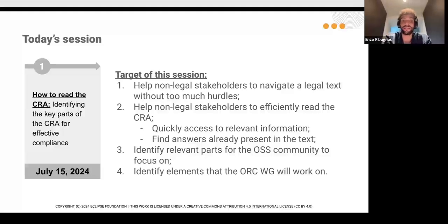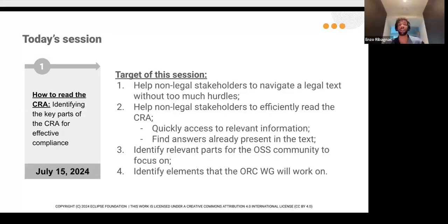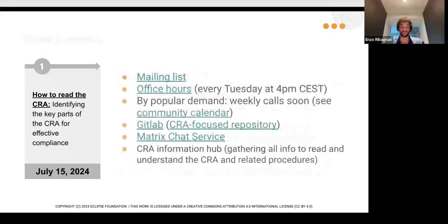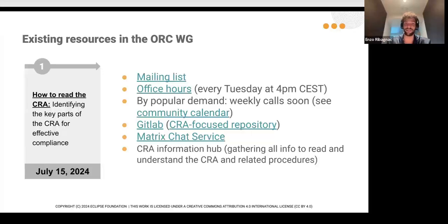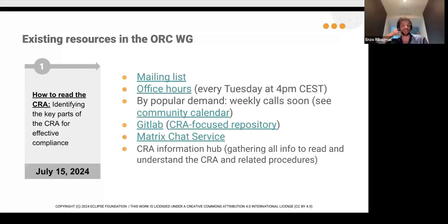Thirdly, we'll try to identify the relevant parts, and also identify the elements that the Open Source Regulatory Compliance Working Group will be working on — there are some elements not relevant for the open source community that are still present in the text. Just as a reminder, we already have within the working group some resources: a mailing list, office hours, a community calendar, a Matrix chat service, and we're building a CRA information hub that is gathering all the information. All recordings of these webinars will be present on this hub.